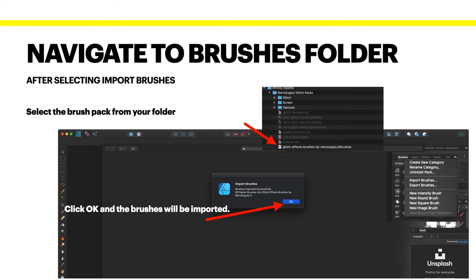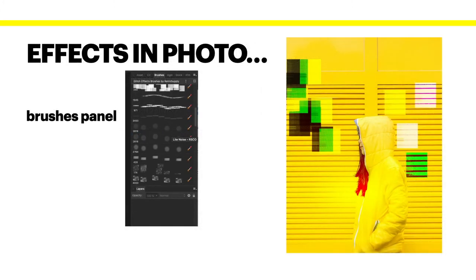If you look over there, you can see just below where it's got import, export, new, intensity, round, square, etc., there are the brushes peeking out from under there where I've already imported them. The effects in Photo — the brushes panel is highlighted there and you can see there are a lot of different brushes. There are way more brushes than I can display on that screen, but that's just to show you that they're in there.